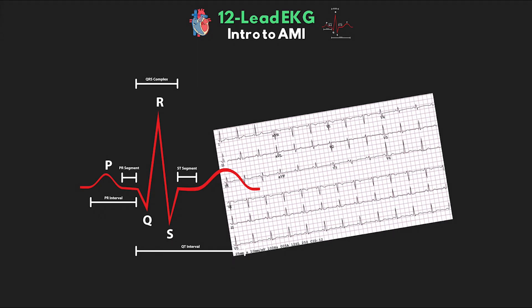We've covered a lot of information over the last series of lessons looking at our 12-lead EKG. This information is very important in helping you evaluate your patient's 12-lead EKG and find any changes that could be signs of various pathologies. One of the most important of these is when our patient is experiencing a lack of oxygen, also known as ischemia and or infarction. We'll take a good look at that over the next couple of lessons, starting with our introduction to acute myocardial infarction in this lesson.